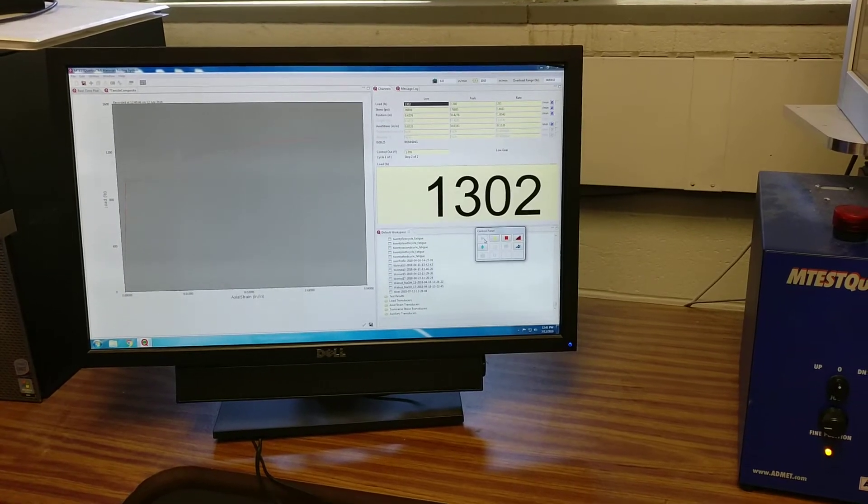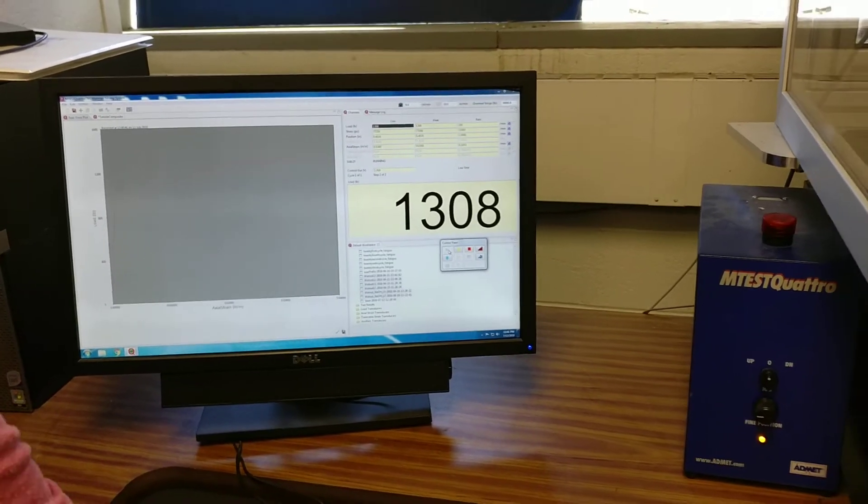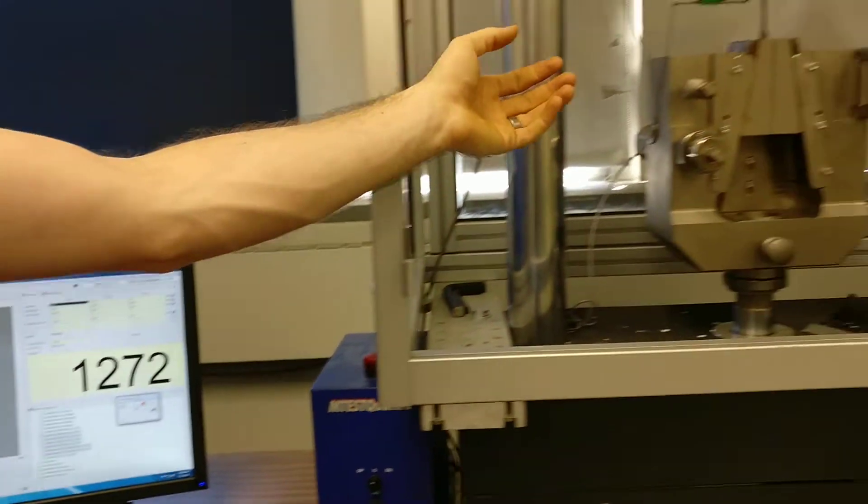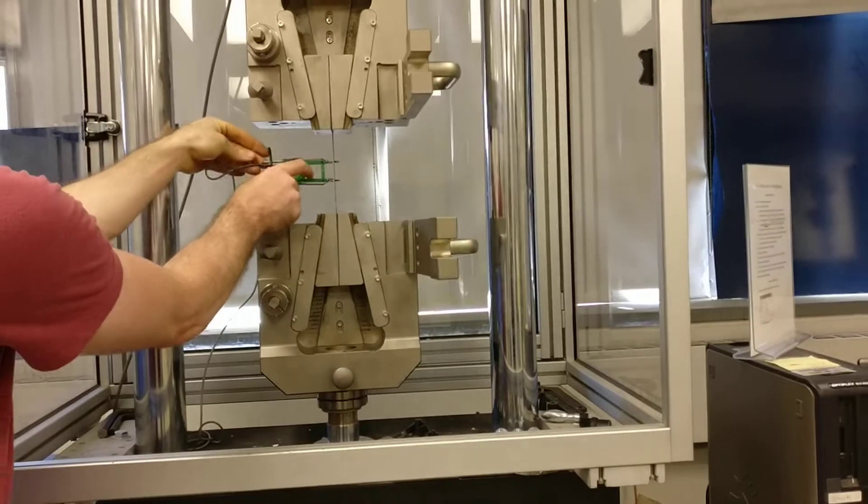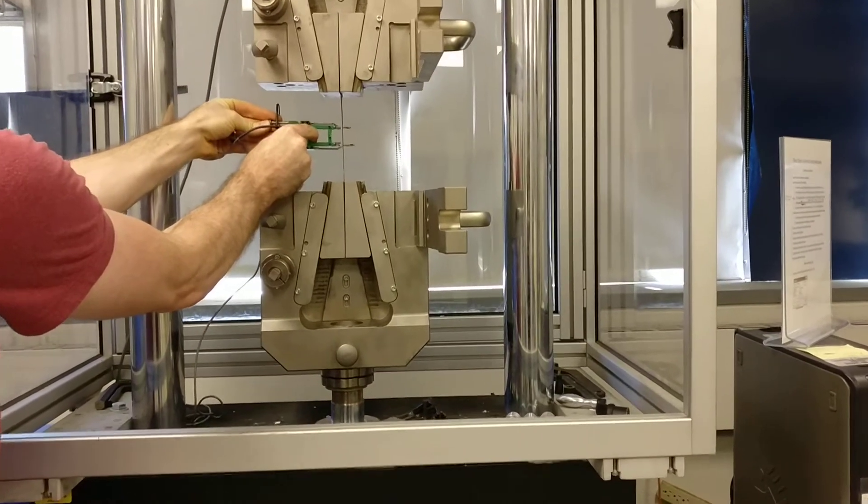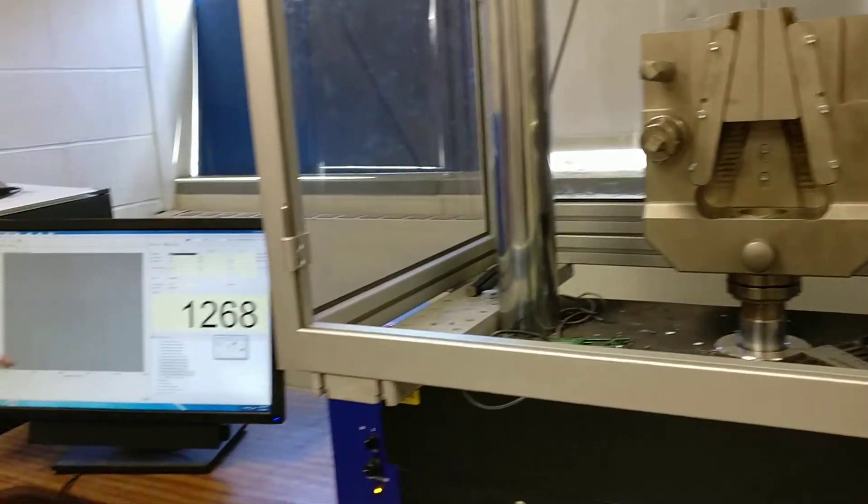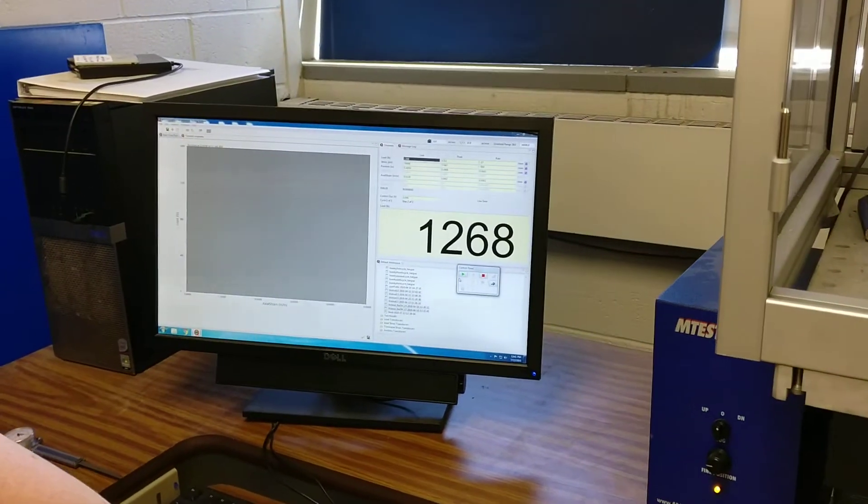If the failure is going to be catastrophic, then I could pause the sample here, and I could remove my extensometer at this point. And then hit the play button and finish the test.